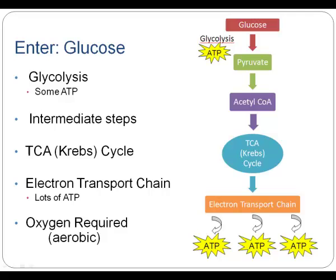Let's first look at glucose. Glucose is really our body's preferred energy source — it can very easily use glucose and convert it into ATP. The first step in the breakdown of glucose is called glycolysis, which is when glucose is converted to pyruvate. In this process, some ATP is produced. It's not a large amount — it's fairly small — but it is a quick process for giving our body a little bit of ATP, providing a little bit of energy.